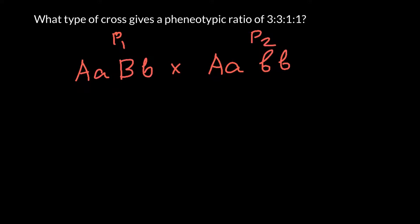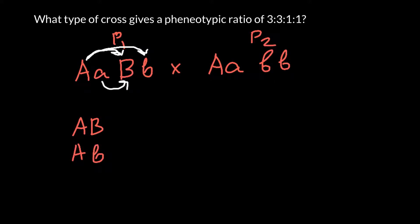What types of gametes can Parent 1 produce? The first type is capital A and capital B. The second variant is capital A and small b. The third variant is small a and capital B. And the last variant is small a and small b.